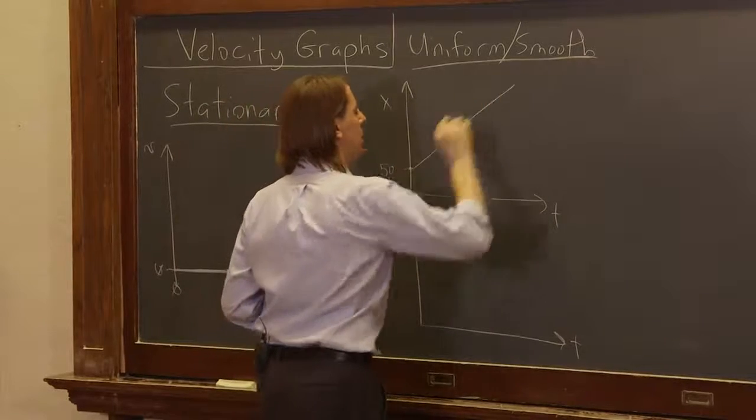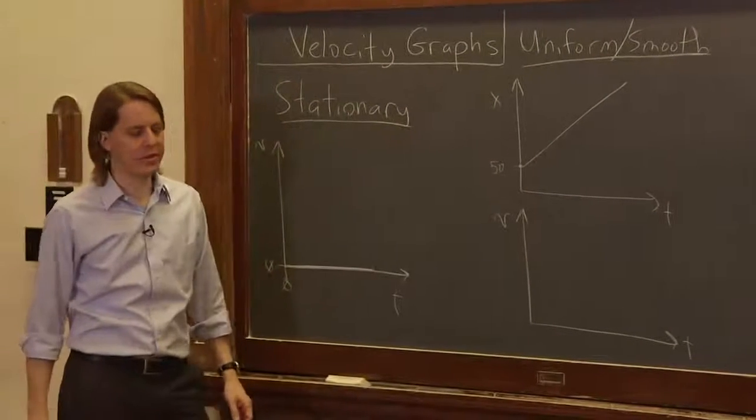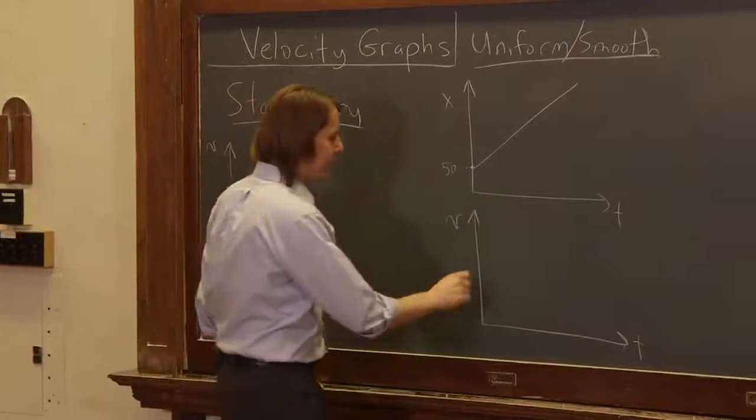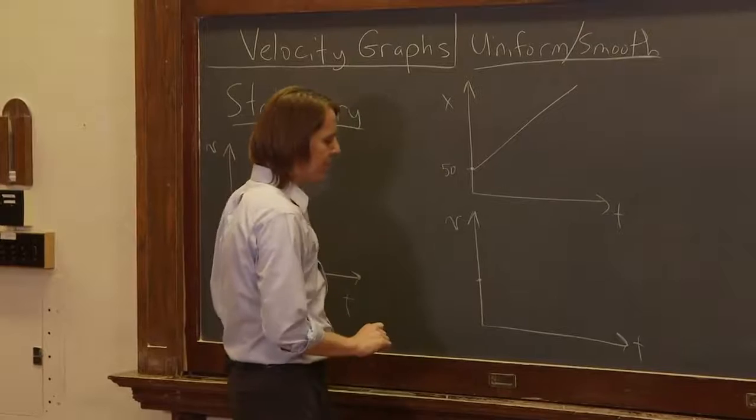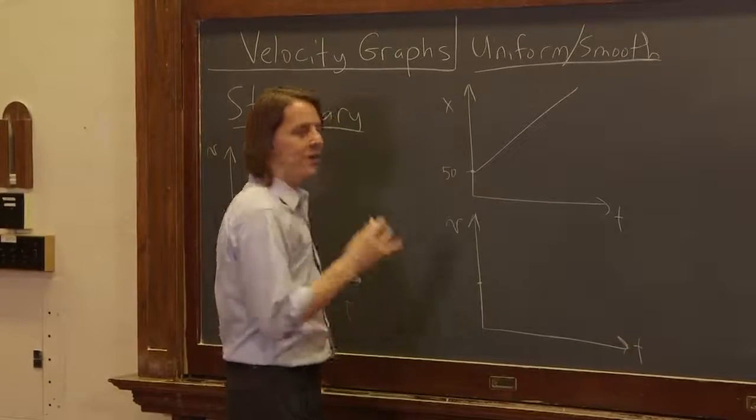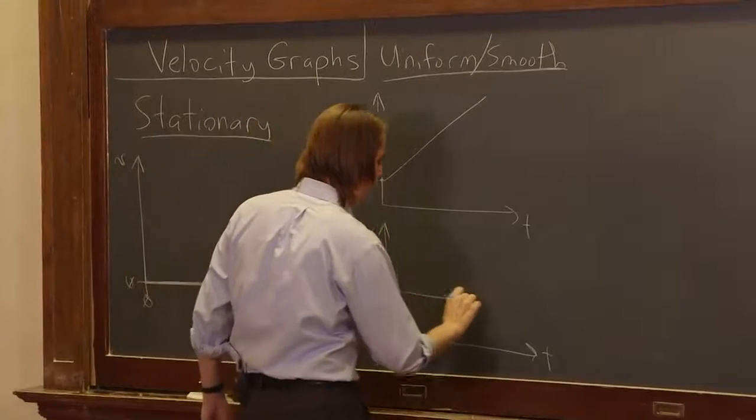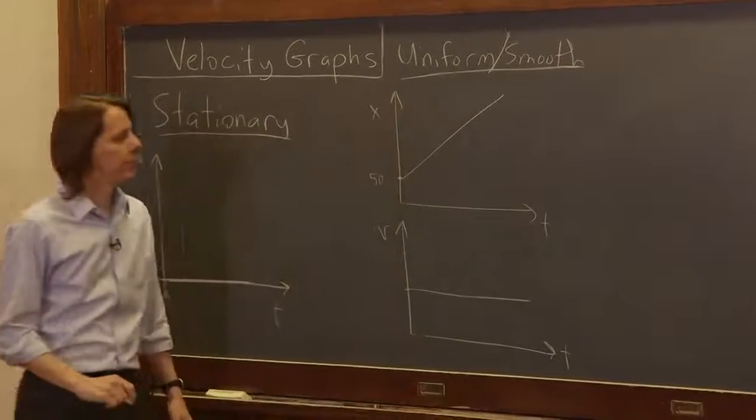We know it moved uniformly, so we know it's going to be a line like that for position-time. And as it moved along, it was at uniform velocity, so it had some velocity, which I'm not measuring, but it's somewhere. We'll say it's there, and it stayed uniform. It didn't change; it stayed constant.